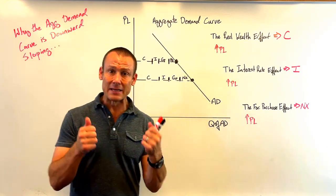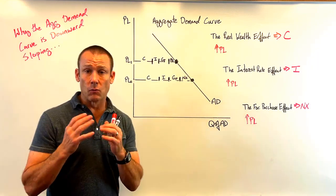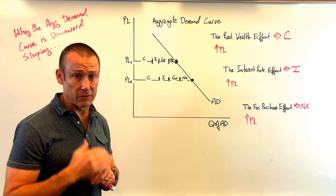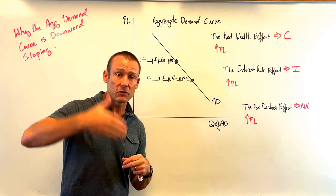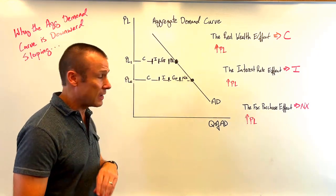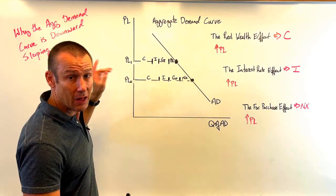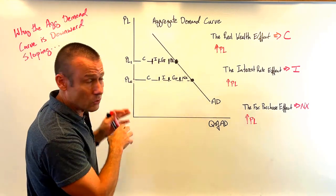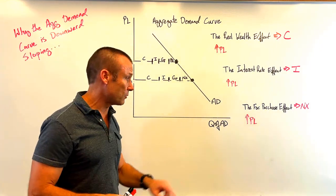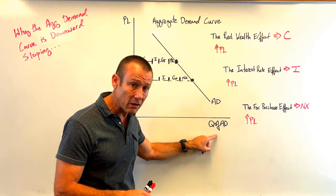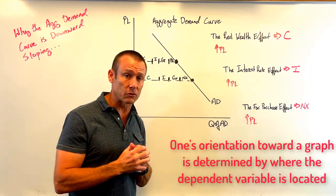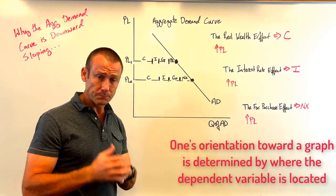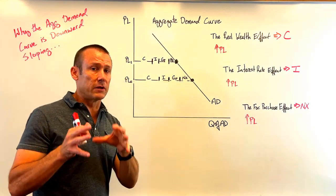Now here's the graph. One thing to know right off the bat is that my orientation toward this graph is horizontal. In a math class, orientation is vertical because we put the dependent variable on the vertical axis. But here the price level is the independent variable; the dependent variable is on the horizontal axis, so my orientation to this graph is horizontal.